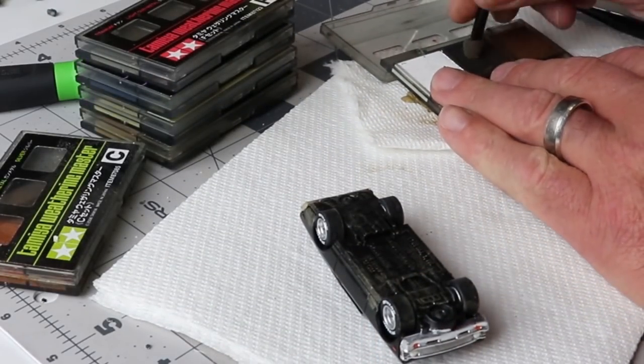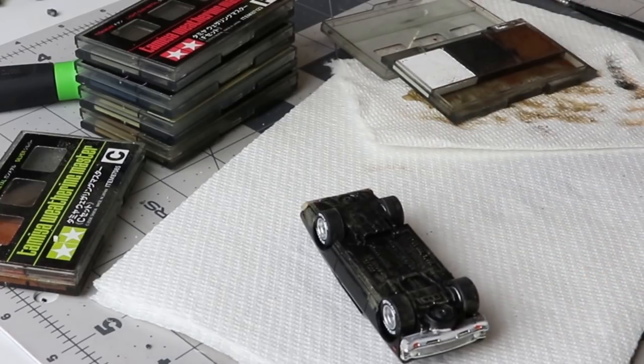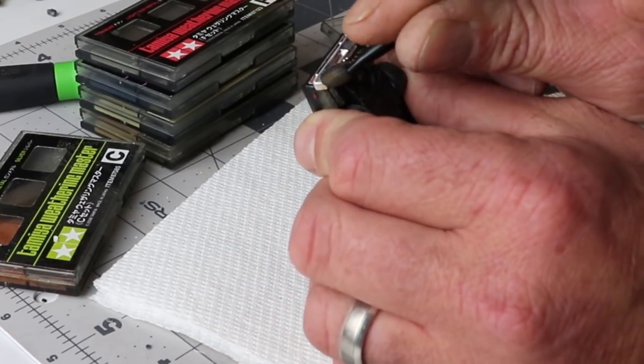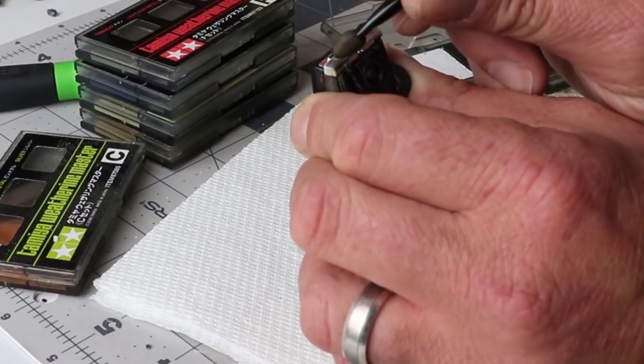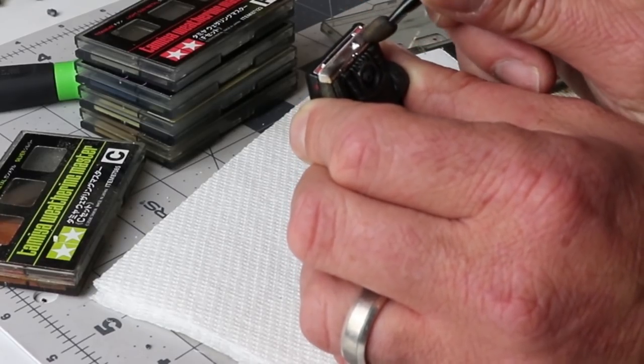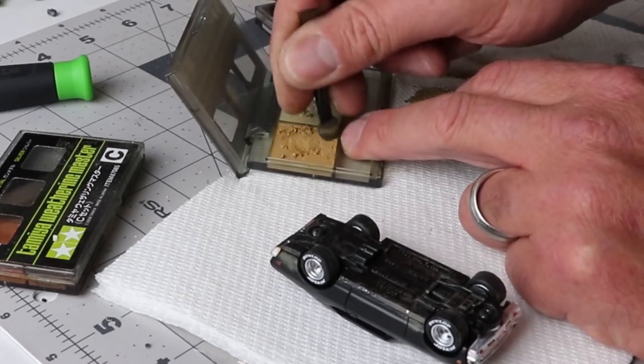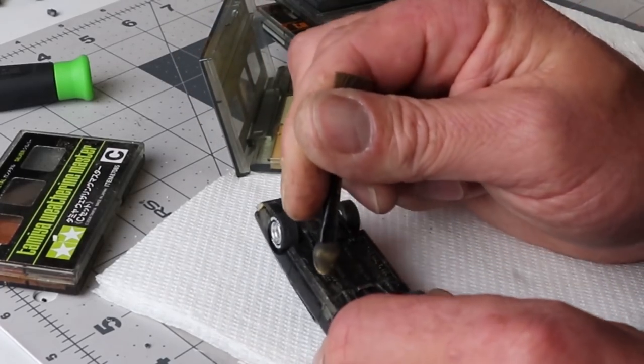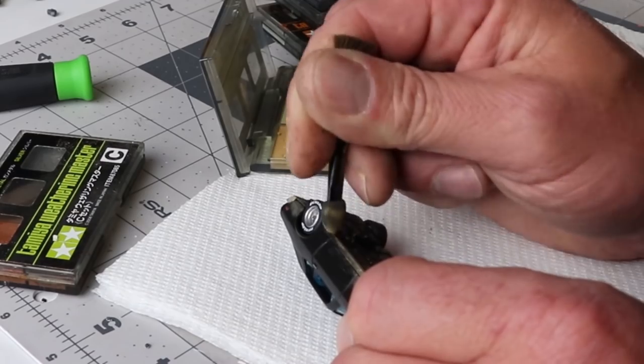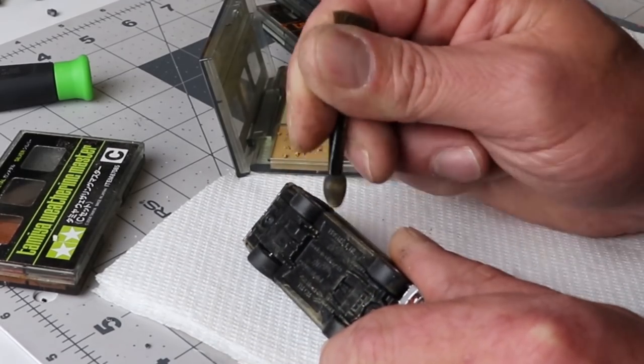Places where dirt and dust would collect when you're driving. I took some soot and I put it around where the exhaust pipes were. Just to add some depth to the rear bumper. Because that's what would, you know, it would really look that way.